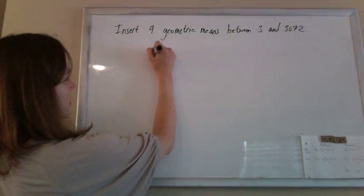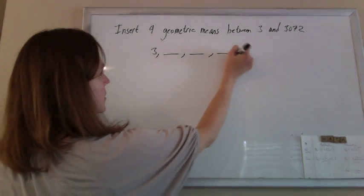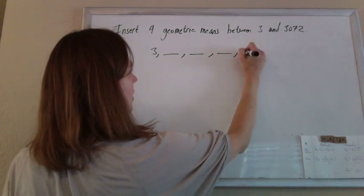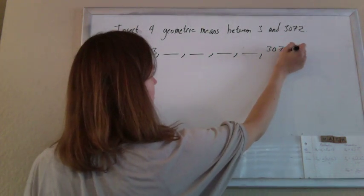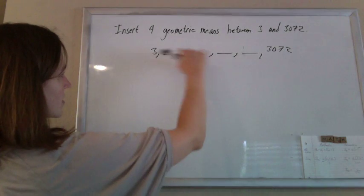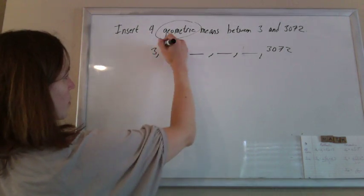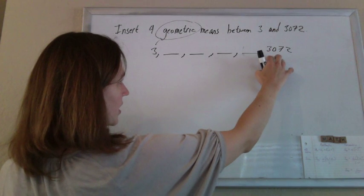Alright, so they want us to insert four geometric means between 3 and 3072. There are only four numbers in here such that, since it's geometric, we're multiplying by the same thing every time we get to here.